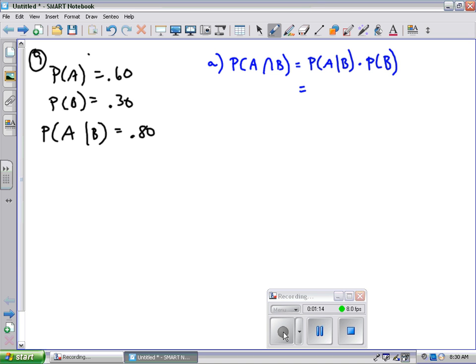So the probability of A given B is 80%. The probability of B is 30%. The answer then is 24%.